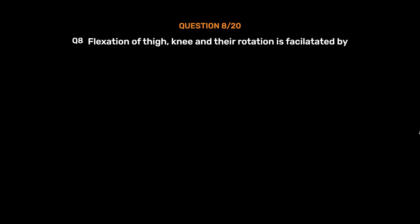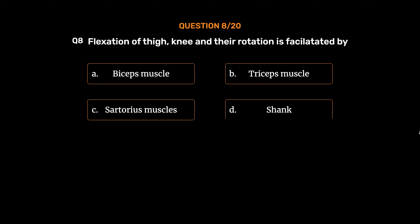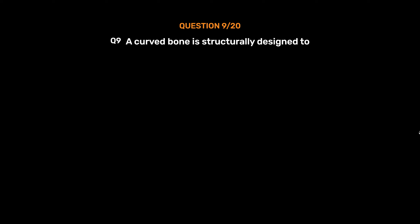Question No. 8. Flexion of thigh, knee and their rotation is facilitated by: Option A. Biceps muscle, Option B. Triceps muscle, Option C. Sartorius muscle, Option D. Shank. The correct answer is Option C, Sartorius muscle.